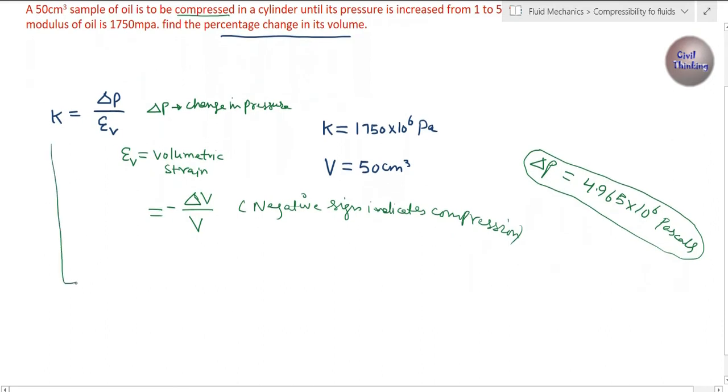We can put K equals ΔP divided by volumetric strain, which is minus Δv upon v. If you take this term to this side, we get minus Δv upon v equals ΔP upon K, or Δv upon v equals minus ΔP upon K.